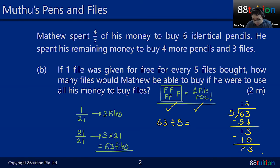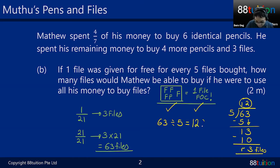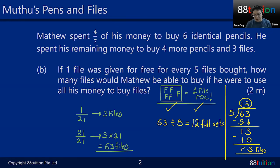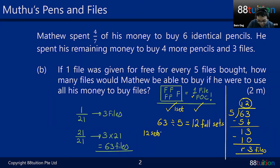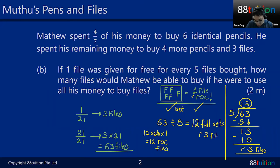There's a remainder of three files that cannot be exchanged for a free file — you can't bargain with the shopkeeper. The quotient is 12, meaning 12 full sets. Each full set entitles you to one free file, so 12 sets entitles you to 12 free-of-charge files. The remaining three files cannot get you another free file.